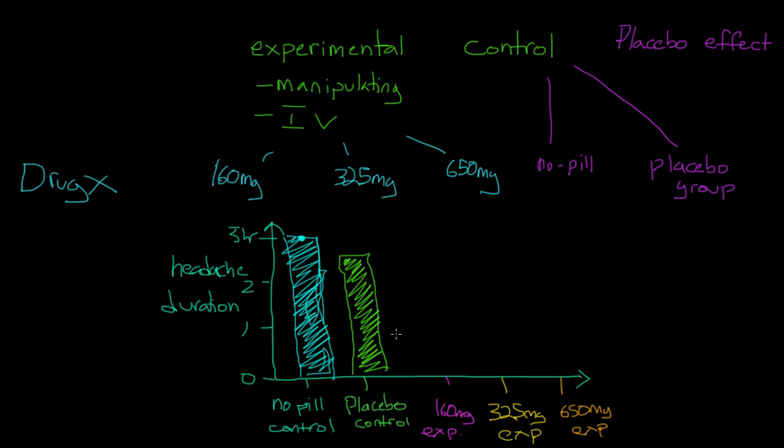The amount of improvement that we can expect to see just when someone thinks that they're taking a substance. And now we can compare all of our experimental groups against this placebo group. And in order to put Drug X on the market, we had to show that these groups show more improvement than the placebo group. So let's say now we have our 160 milligram group, and they've shown some improvement. And then our 325 milligram group - maybe they've shown even more improvement. And for our 650 milligram group, for the group that got the extra strength dose, maybe we see really vast improvement.